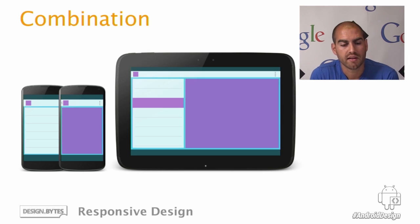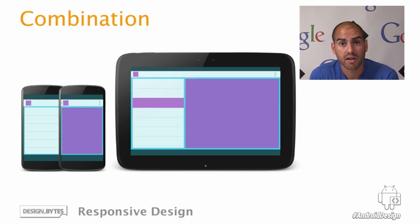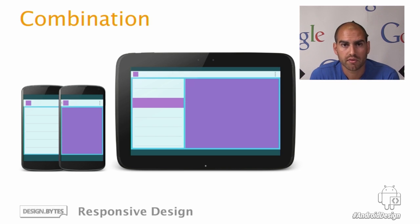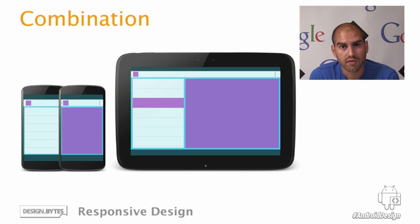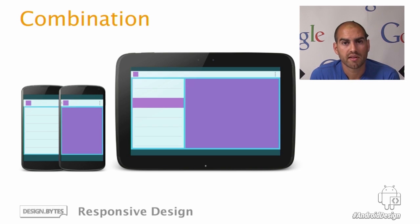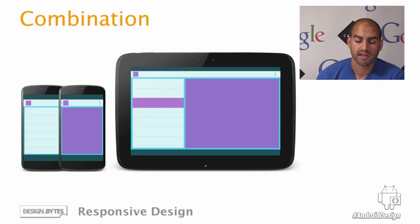The first technique is simply one of combination — if you have extra room, combining things from different screens onto a single screen in order to fill up the space. In this example, we have a typical master-detail view, which on a phone would be on two separate screens — clicking through from a list item might show subsequent details. On a larger device with sufficient width, we might show both of these things at once. This will avoid the problem of having those excessive line lengths and make better use of the screen real estate.